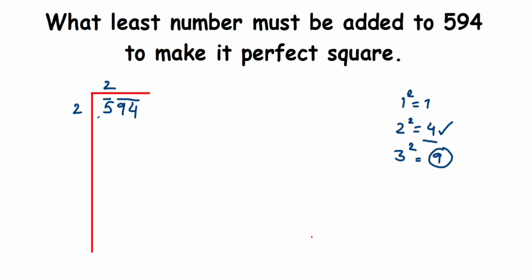So subtracting 4 leaves the remainder 1. Now drop this 94 down. See, you're not dropping single 9, we're dropping 94 because that is in a pair.